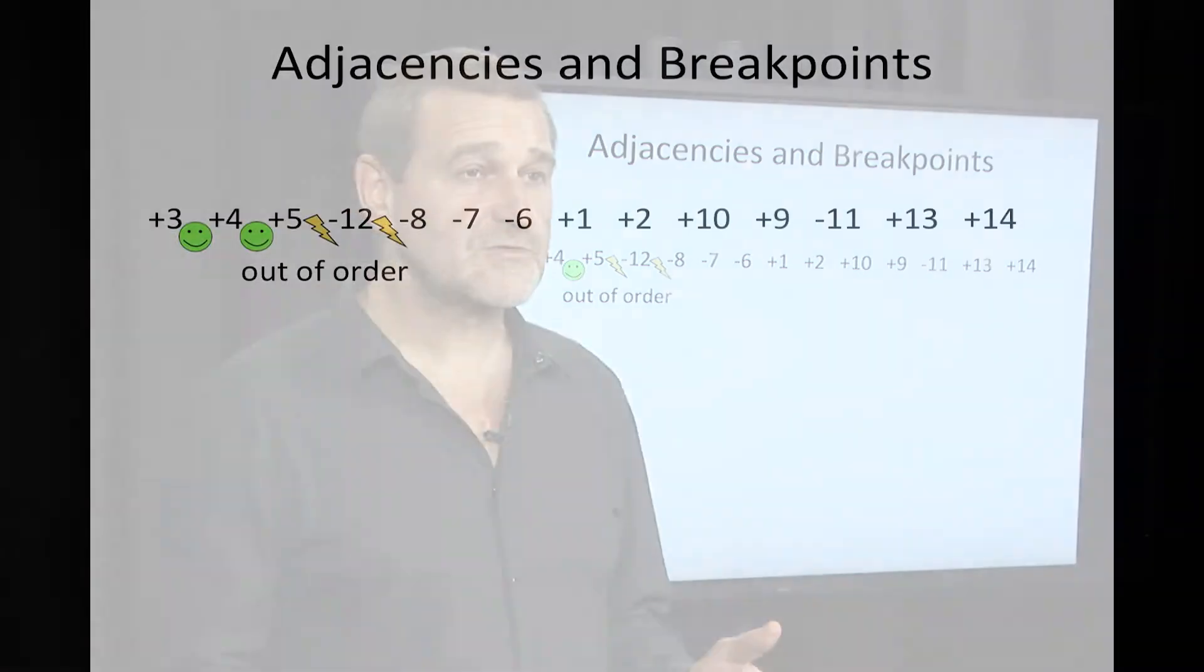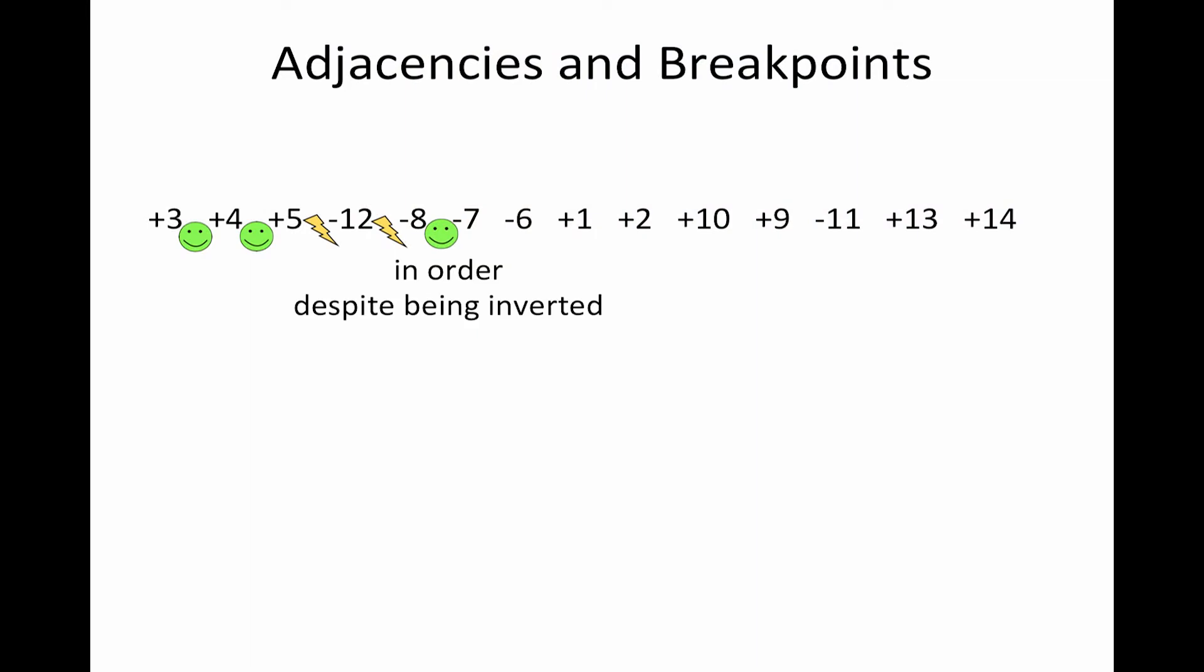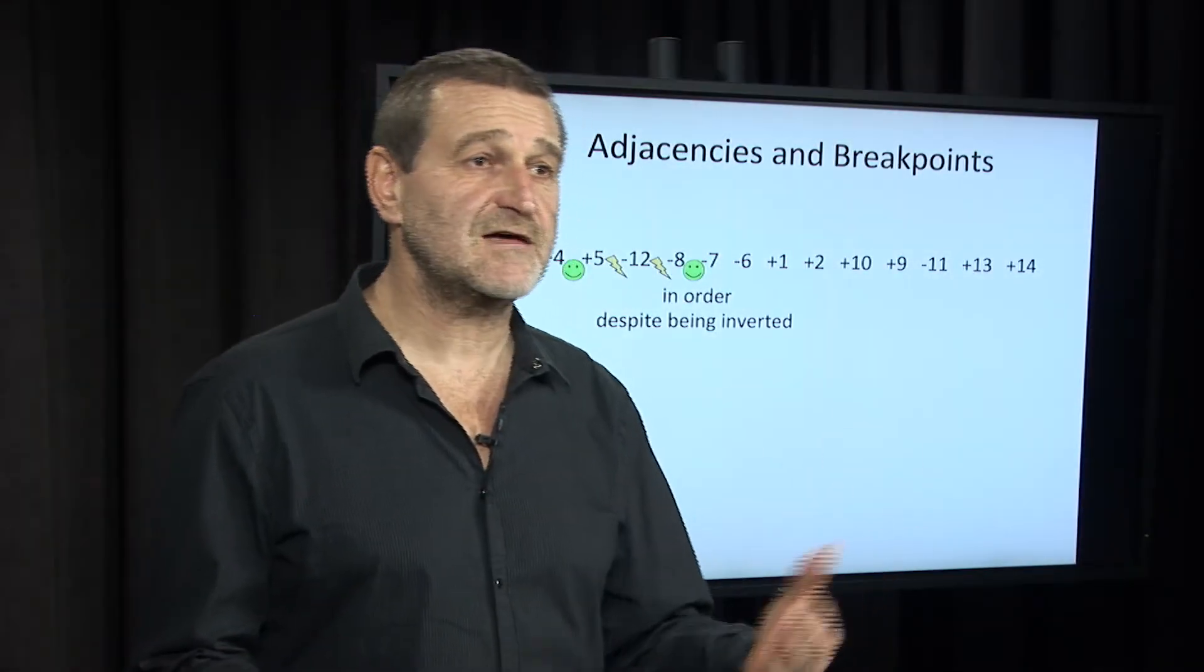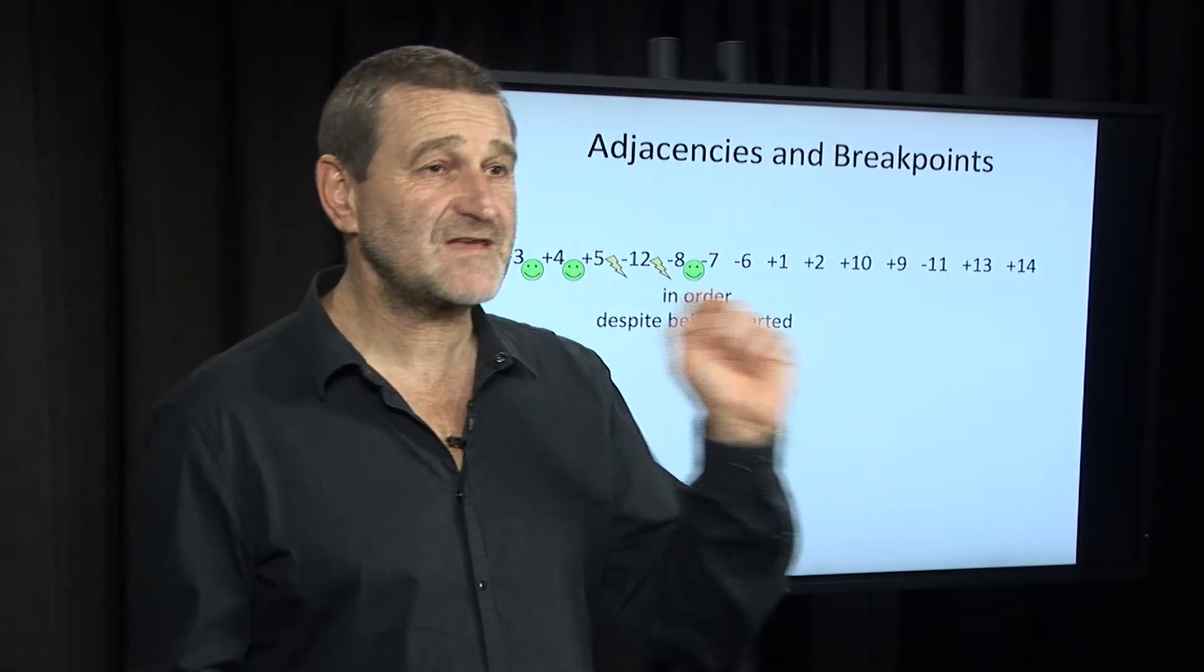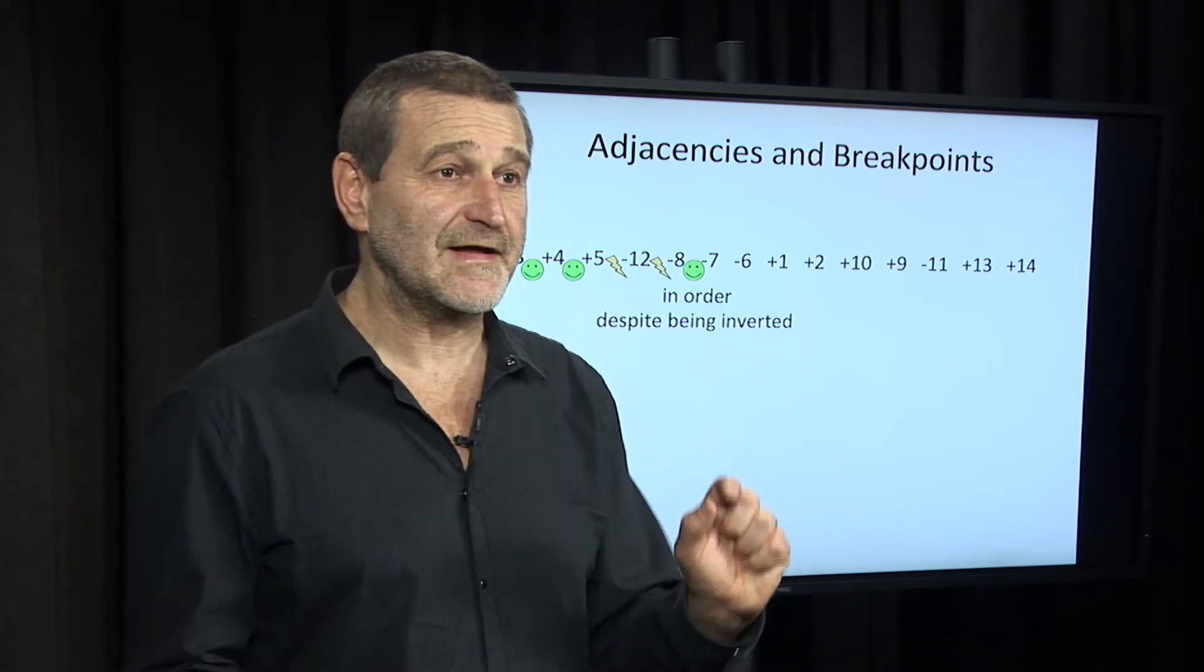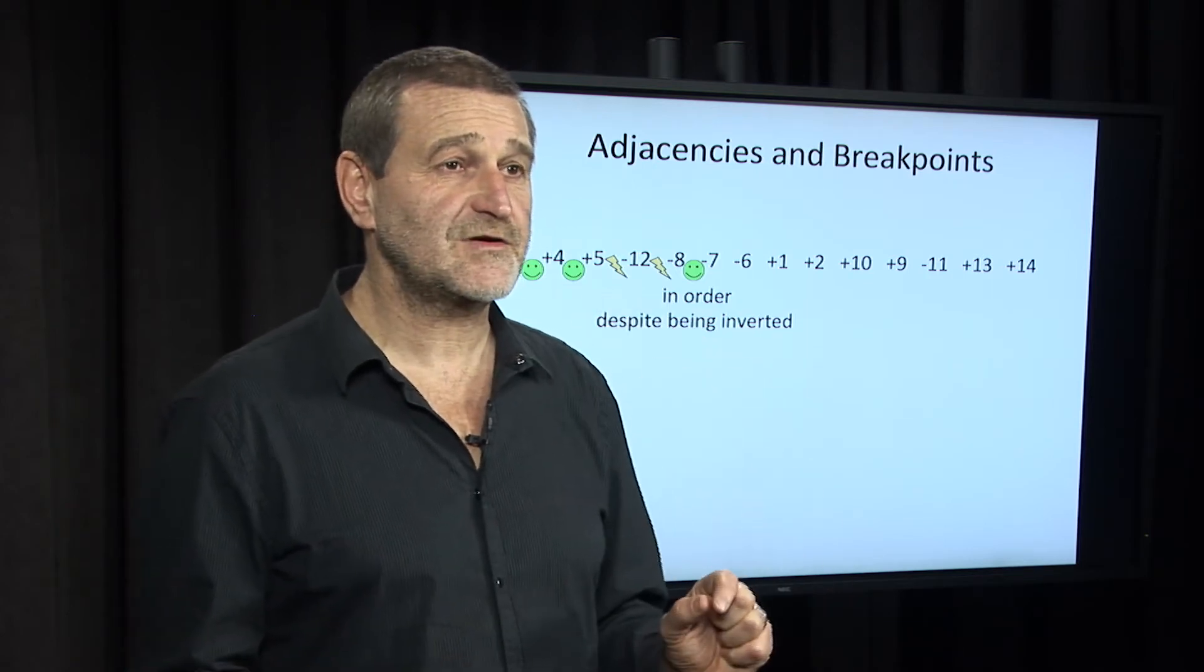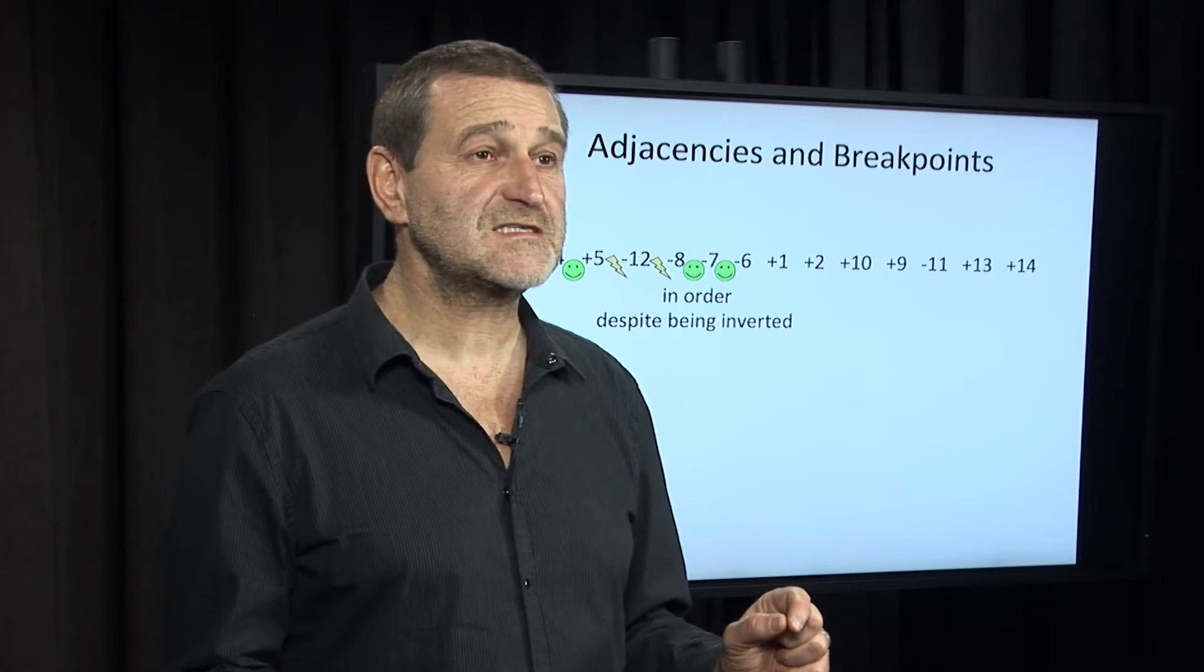Minus twelve, minus eight, also a breakpoint. This is an interesting case: minus eight and minus seven. It's not plus seven and plus eight as we want to see in the identity permutation. But maybe there will be a reversal that contains both minus eight and minus seven, and then after reversing, they will turn into perfect orientation and will correspond to the case plus seven and plus eight. And that's why we say minus eight and minus seven, despite being inverted. Minus seven, minus six, the same story.